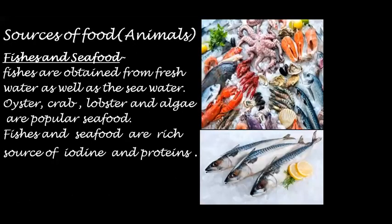The next important source of food that we get from animals is fish and seafood. Fishes are obtained from fresh water as well as sea water. Oyster, crab, lobster and algae are popular seafood. Fish and seafood are a rich source of iodine and proteins.